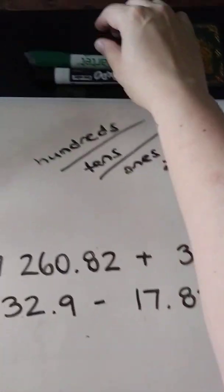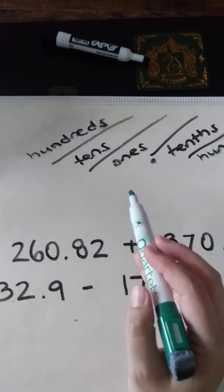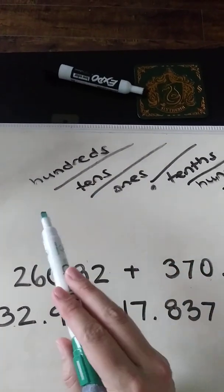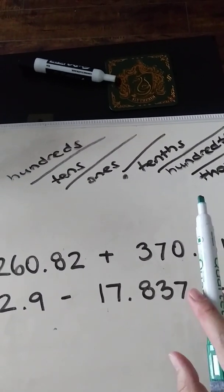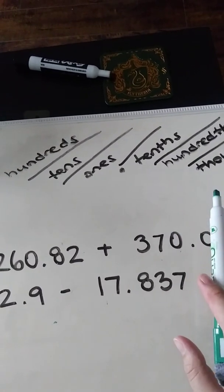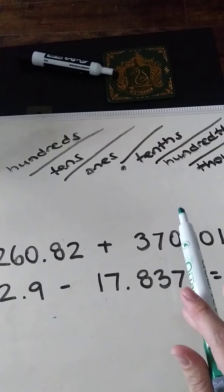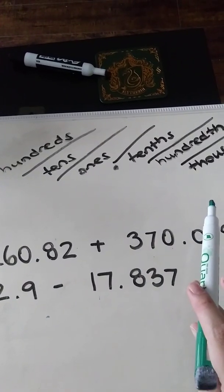Just a quick review of what we discussed last time. Remember everything to the left of the decimal is the whole number. Everything to the right of the decimal are the parts of the whole or the fraction. And remember decimals and fractions are directly related to each other.